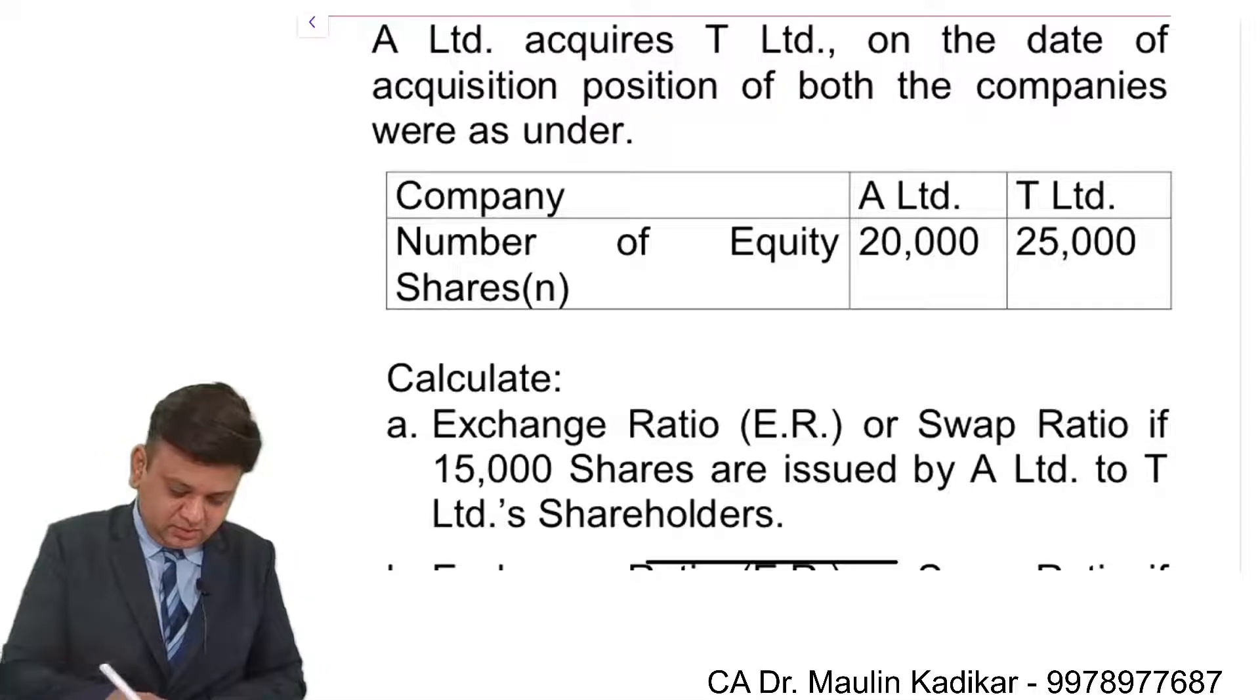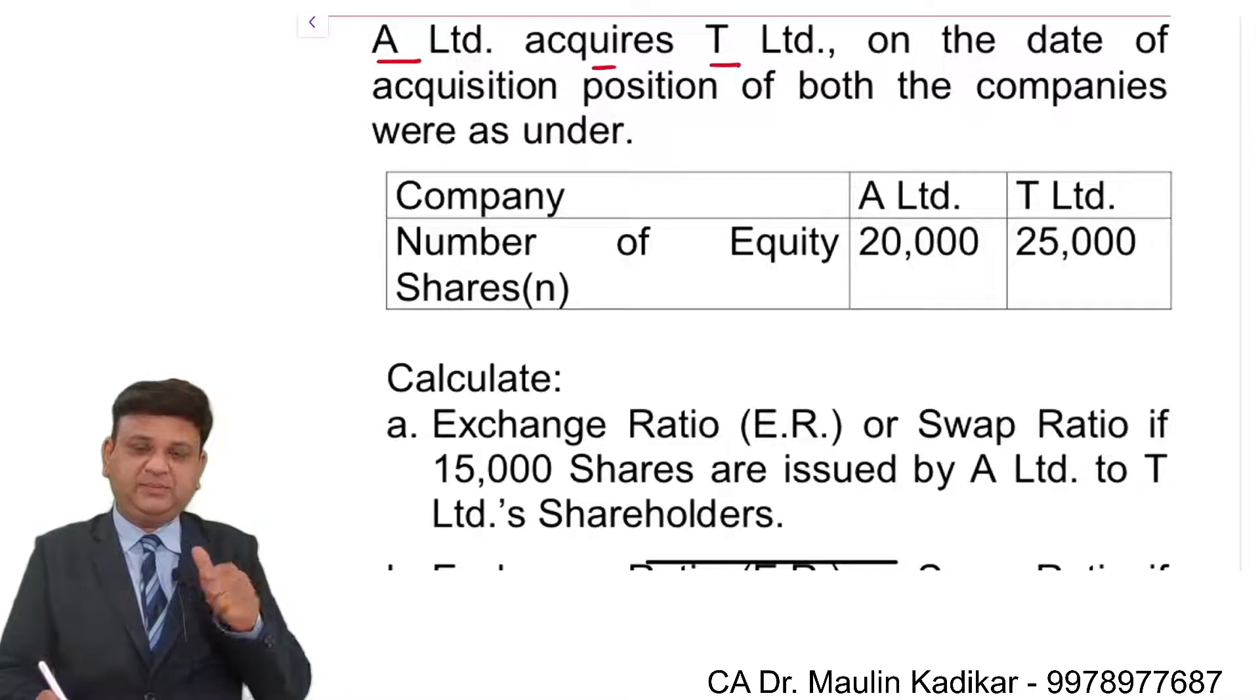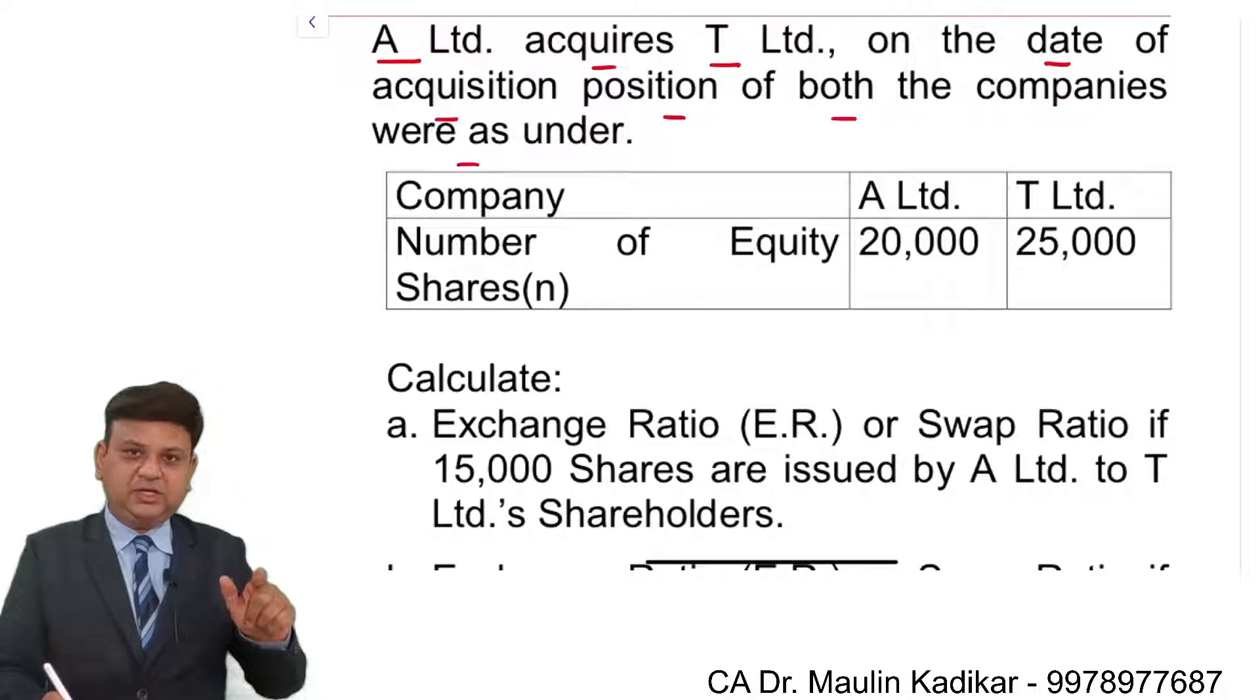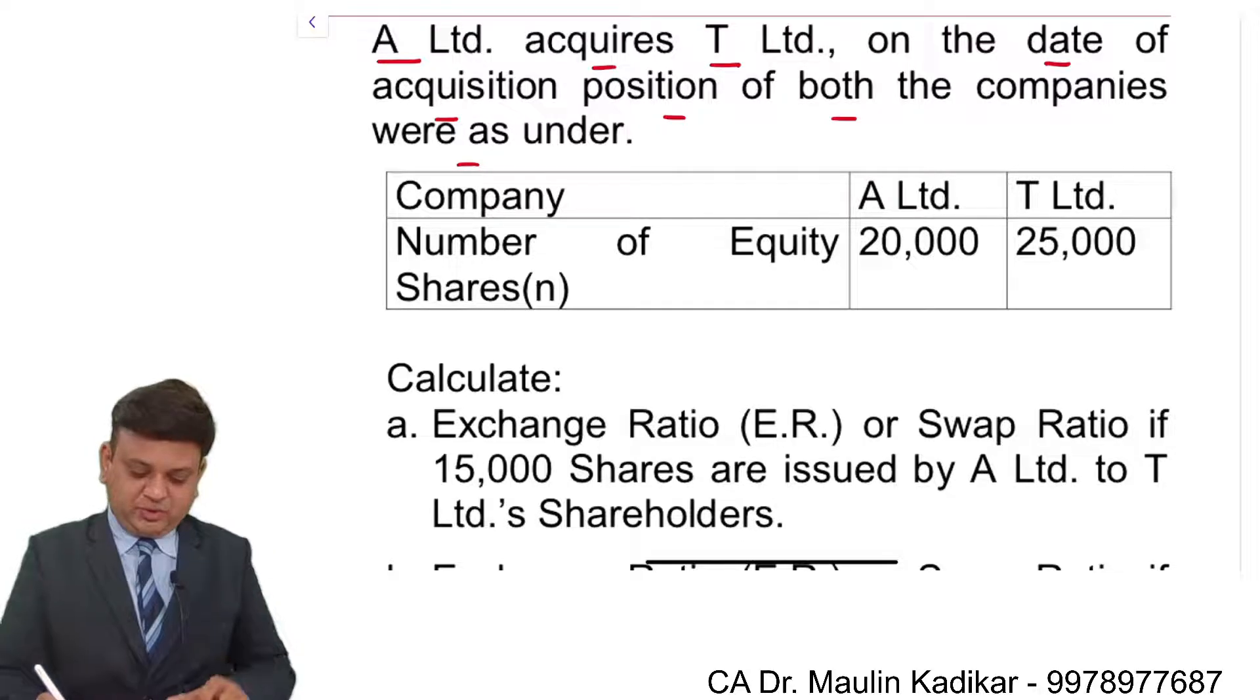Let us see the next question. A Limited acquires T Limited. A Limited is the acquiring company, T Limited is the target company. On the date of acquisition, position of both the companies were as under. So on the date of acquisition, position is given for both the companies.